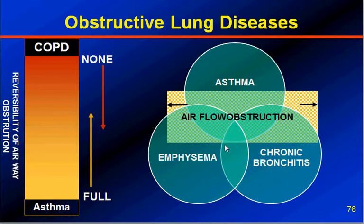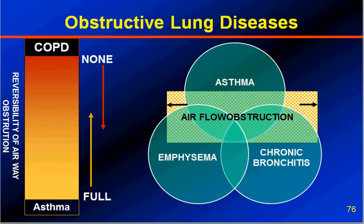Asthma, emphysema, and chronic bronchitis overlap one another, sharing certain common features in some areas, while being independent and exclusive in others. Airflow obstruction is the underlying common denominator for both. What causes airflow obstruction in asthma is airway inflammation due to allergens and inflammatory response, whereas in chronic bronchitis it is due to the noxious agent causing chronic inflammation, and is partially or totally irreversible.